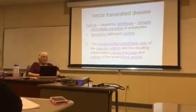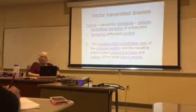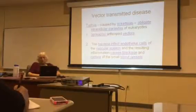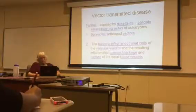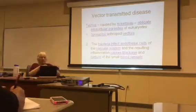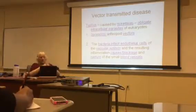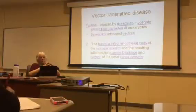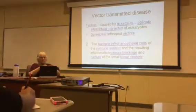Typhus is caused by Rickettsia, which is a type of bacteria. They're very tiny bacteria, so they are obligate intracellular parasites of eukaryotic cells. They're spread by arthropod vectors. The bacteria infect the endothelial cells of the vascular system — that's the inner lining of the blood vessels — and that results in inflammation, which causes blockage and rupture of the small blood vessels.